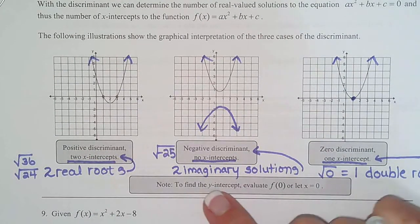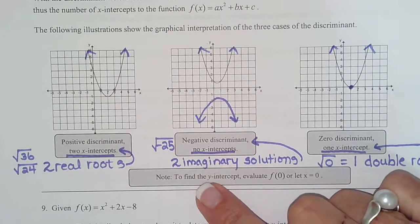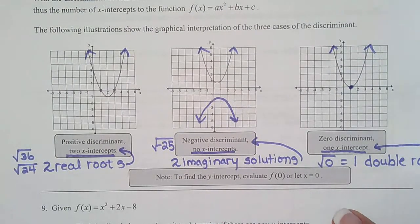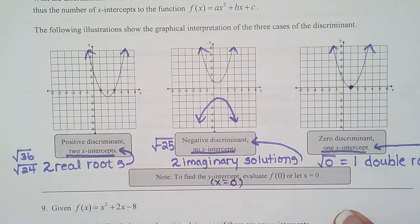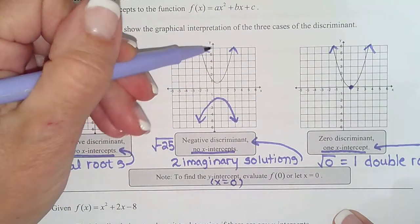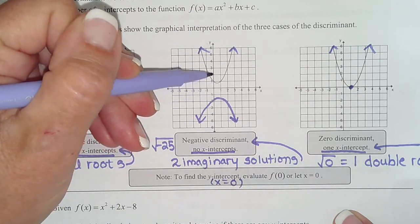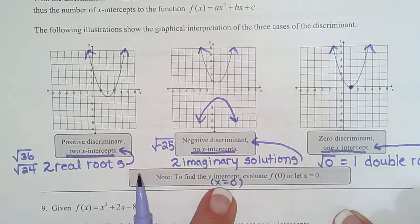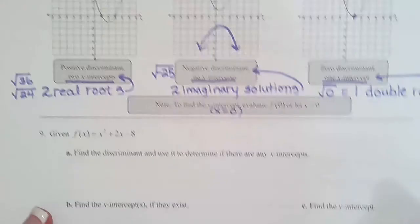And then just a reminder to find y-intercepts. Y-intercepts are when you make x equals zero. And why is that? Because every point on the y-axis has x equals zero: (0,1), (0,2), (0,3). So to find it algebraically, you just plug zero in for all the x's. That's how you find the y-intercept.